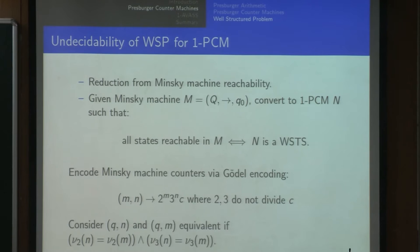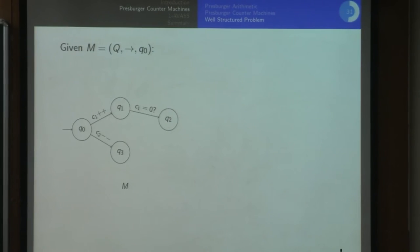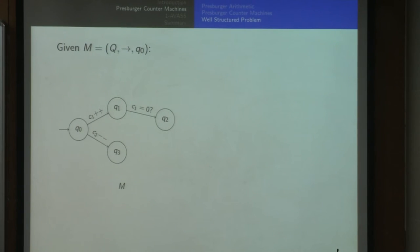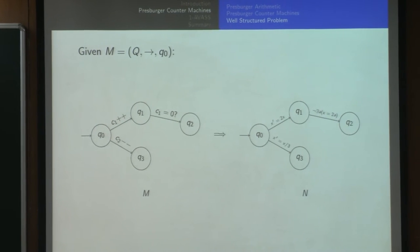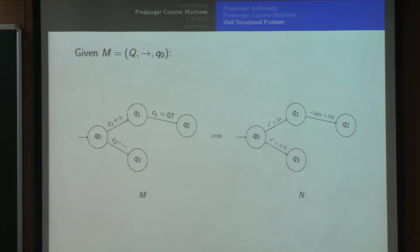Since the other factors don't matter, we only care about the exponents of 2 and 3. We can define an equivalence relation on the configurations of the one PCM, where two values of the counter are equal if the exponents of 2 and 3 are the same. To show the reduction on an example: suppose this is the Minsky machine with two counters C1 and C2. The corresponding one PCM will simulate the Minsky machine. You start with the same set of states, then add corresponding relations which simulate the counter operations. Incrementing the first counter corresponds to incrementing the exponent of 2—so you multiply by 2. Similarly, decrementing corresponds to division, and a zero test corresponds to checking divisibility by 2.